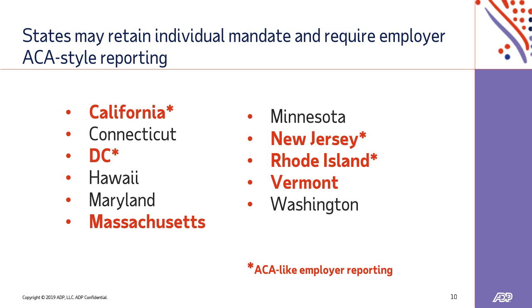As the regulatory portion of the ACA continues to be challenged in court, many states have determined that they will retain an individual mandate of their own, including ACA-style employer reporting. While many of these states have activity regarding implementing their own mandates, only six have taken definitive action: California, Washington D.C., Massachusetts, New Jersey, Rhode Island, and Vermont. Of those that have taken action, only California, D.C., New Jersey, and Rhode Island have included an ACA-like regulation with employer reporting components.